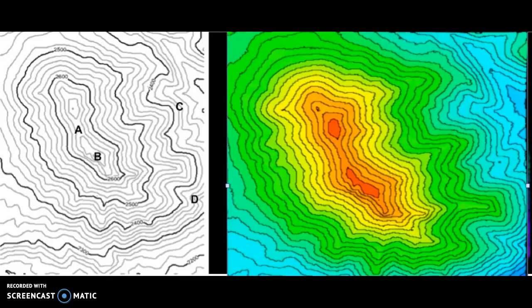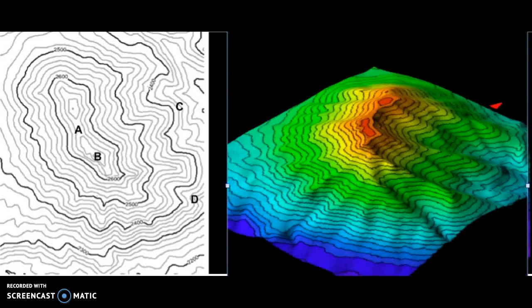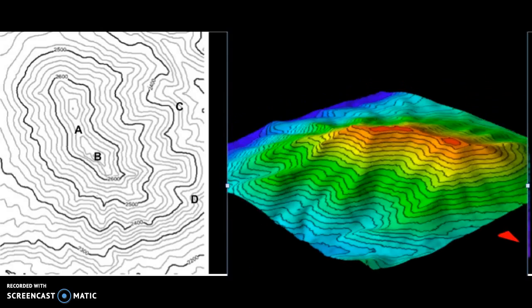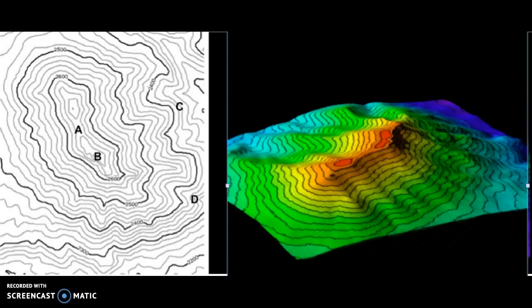Topographic maps are tools that help represent elevation through the use of contour lines. The maps here show two different ways of representing a hill.